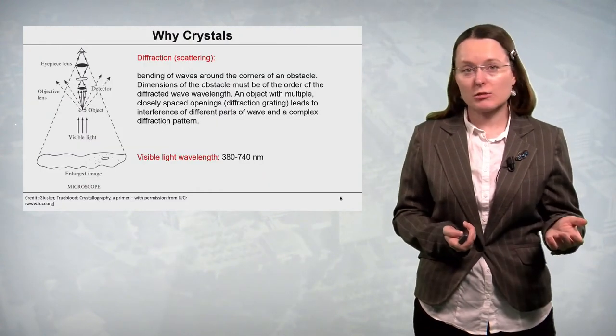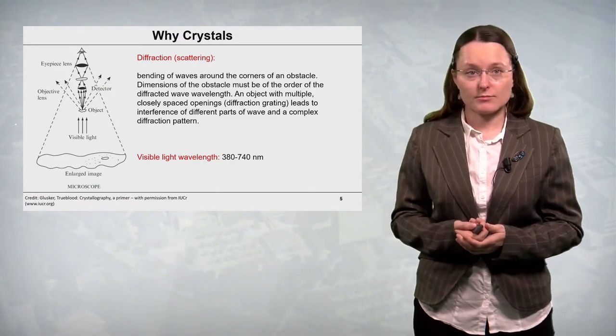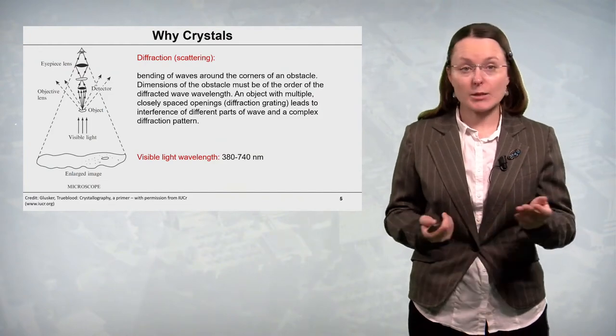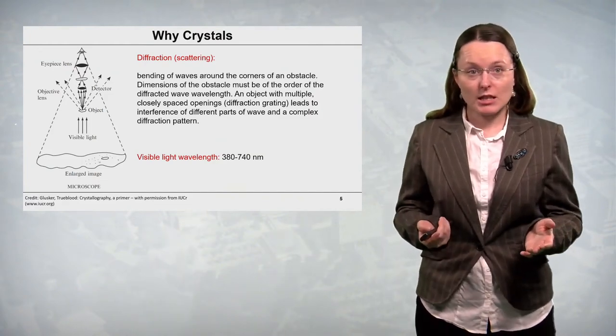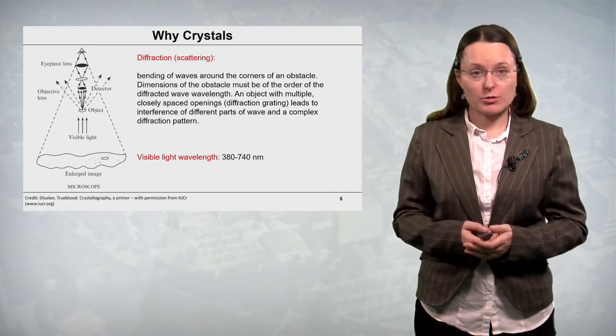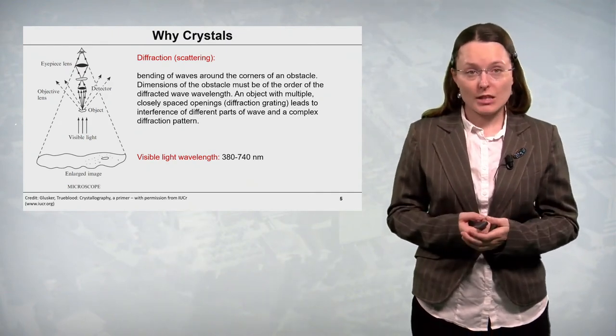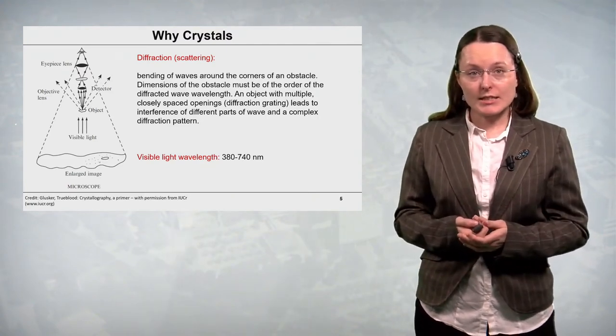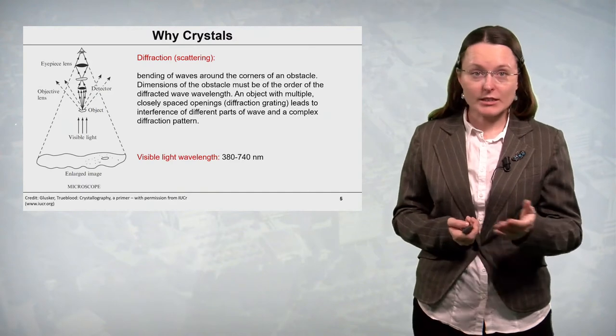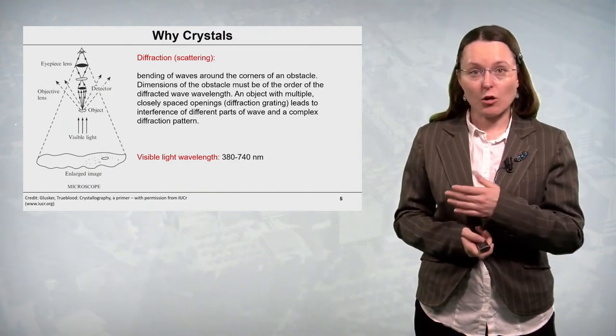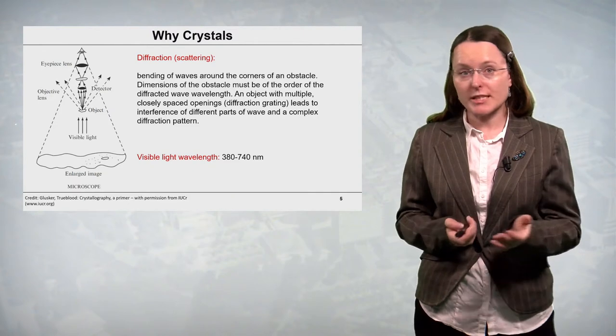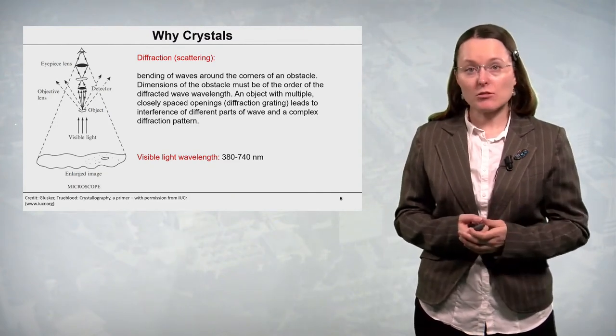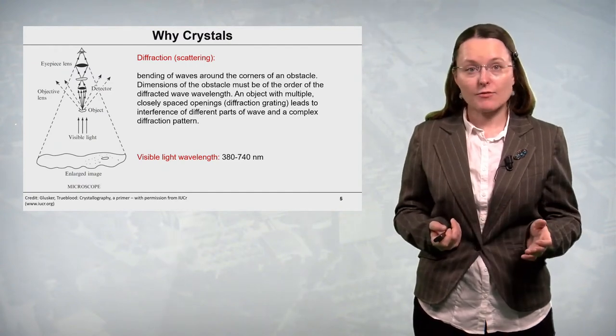Why do we need crystals for an X-ray diffraction experiment? If we have a small object and we want to learn about its structure, we typically use a light microscope. In this microscope the object diffracts visible light. This diffraction or scattering is bending of waves around the corners of some kind of obstacle. And it is possible when the dimensions of the obstacle are in the order of the diffracted wavelength.